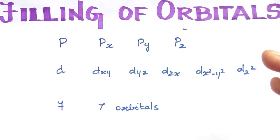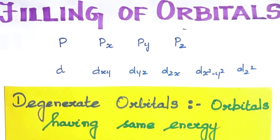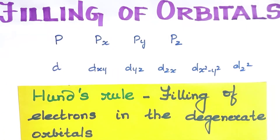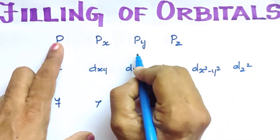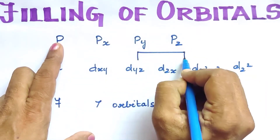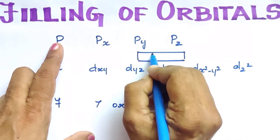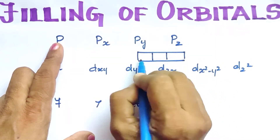These are called degenerate orbitals. To understand how electrons fill these degenerate orbitals, we apply Hund's Rule. We represent each orbital as a box. The P orbital has 3 orbitals, so we draw 3 boxes. The D orbital has 5 orbitals, so we draw 5 boxes.